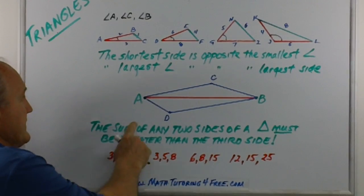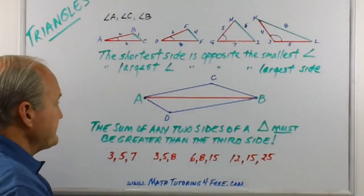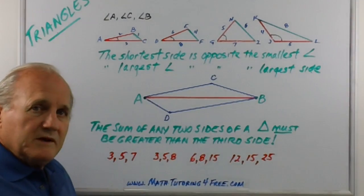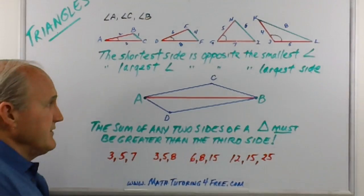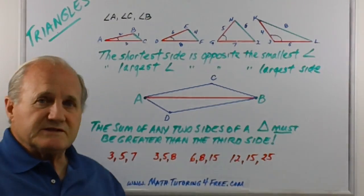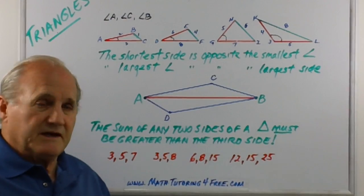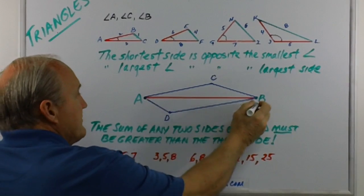The other truism that you need to remember with triangles is that the sum of any two sides of a triangle must be greater than the third side. I call this the shortest distance between two points is a straight line.